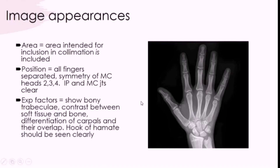To decide if your exposure factors are adequate, look for bony trabecular patterns — the pattern of little lines and wrinkles within the bone. You also need enough contrast to differentiate bony areas from soft tissue areas. A good indicator that your exposure factor is correct is being able to clearly see the hook of hamate.